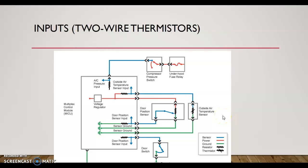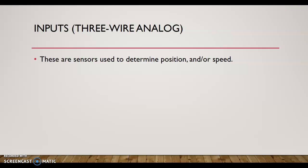Alright, here we are part two of inputs and outputs. Looking at computer processing, we left off with two-wire thermistors. From here, our next input we're going to talk about is three-wire analog sensors.